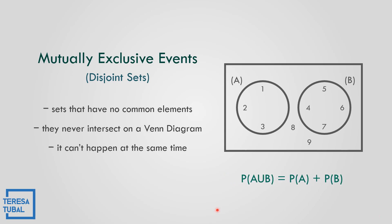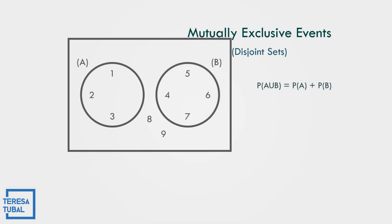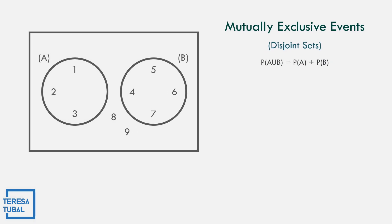What is the formula for mutually exclusive events? The formula: probability of A union B equals the probability of A plus the probability of B. In event A we have 1, 2, 3; while event B has 4, 5, 6, 7; and outside both events are 8 and 9.